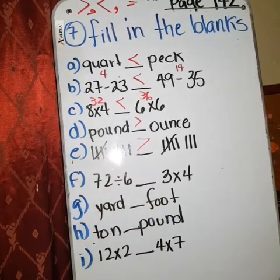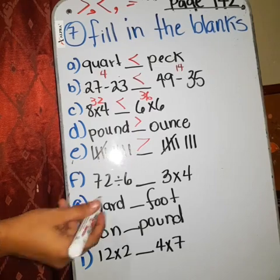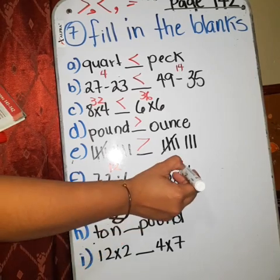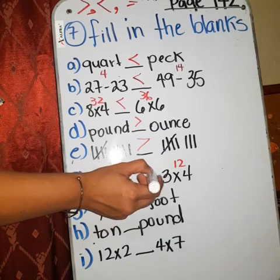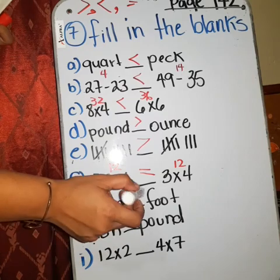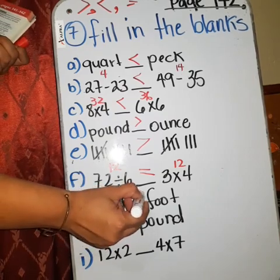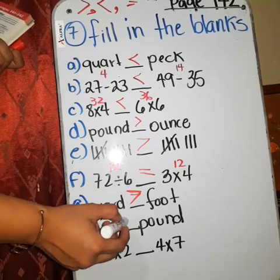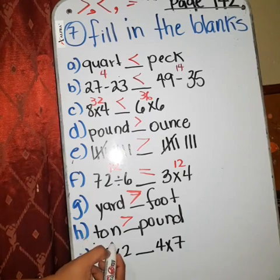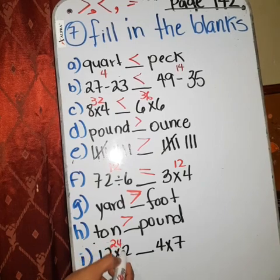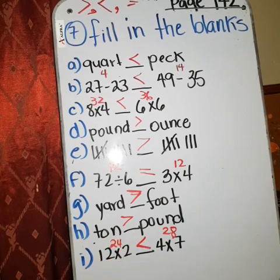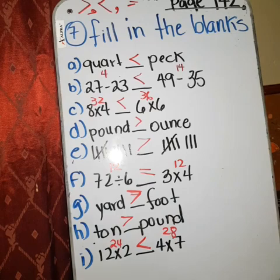72 divided by 6. How is 72 divided by 6? 12. And 3 times 4? 12. There is equals. Did you see? Yard is greater than or less than foot? It's greater than. Ton is greater than or less than a pound? Greater than. And 12 times 2? 24. And 4 times 7? 28. So this is less than 7. Got it?